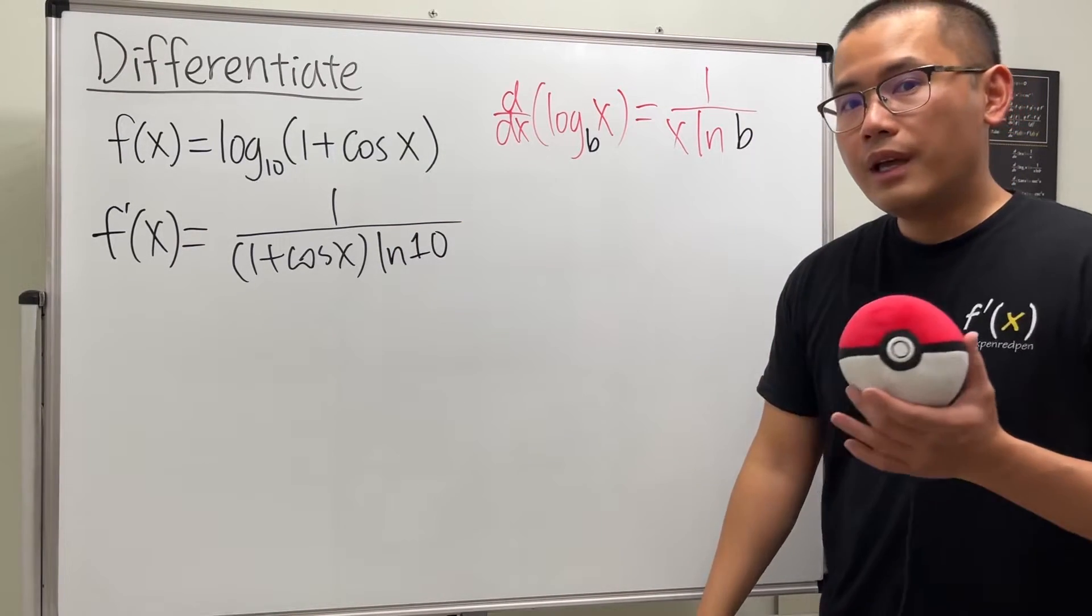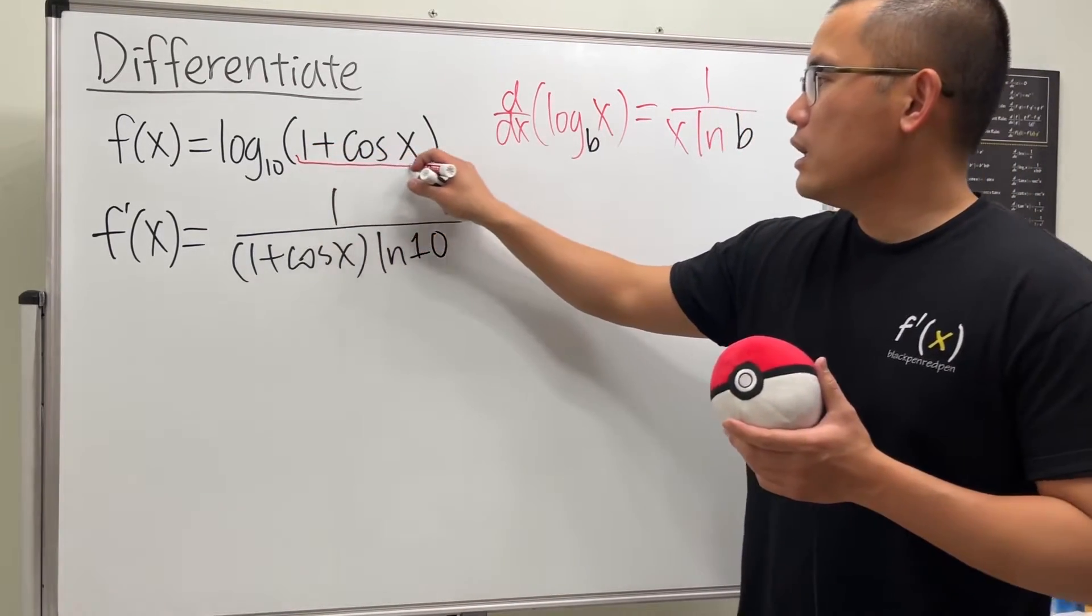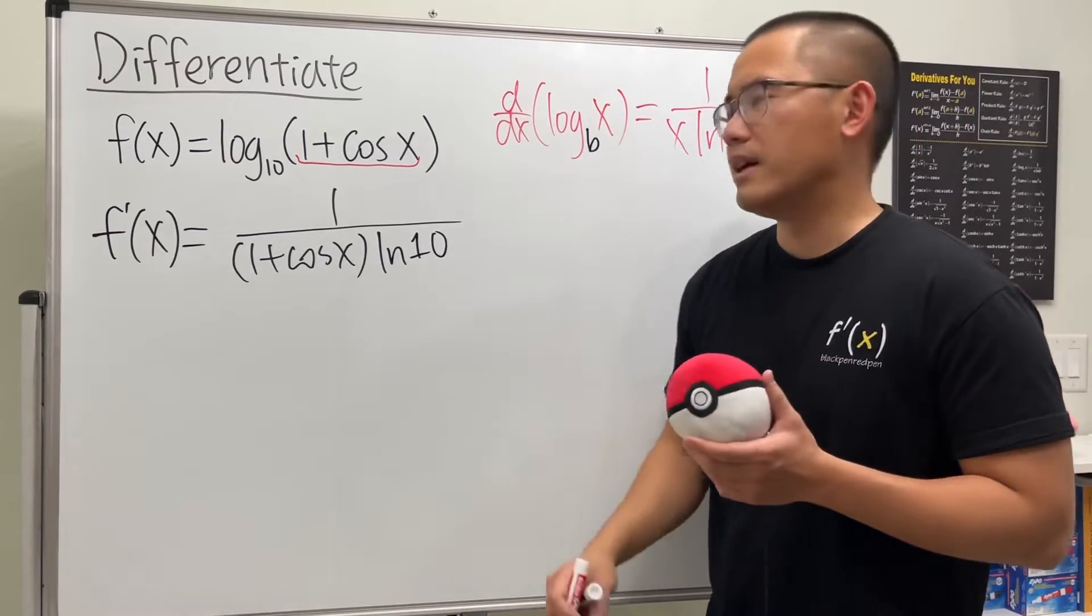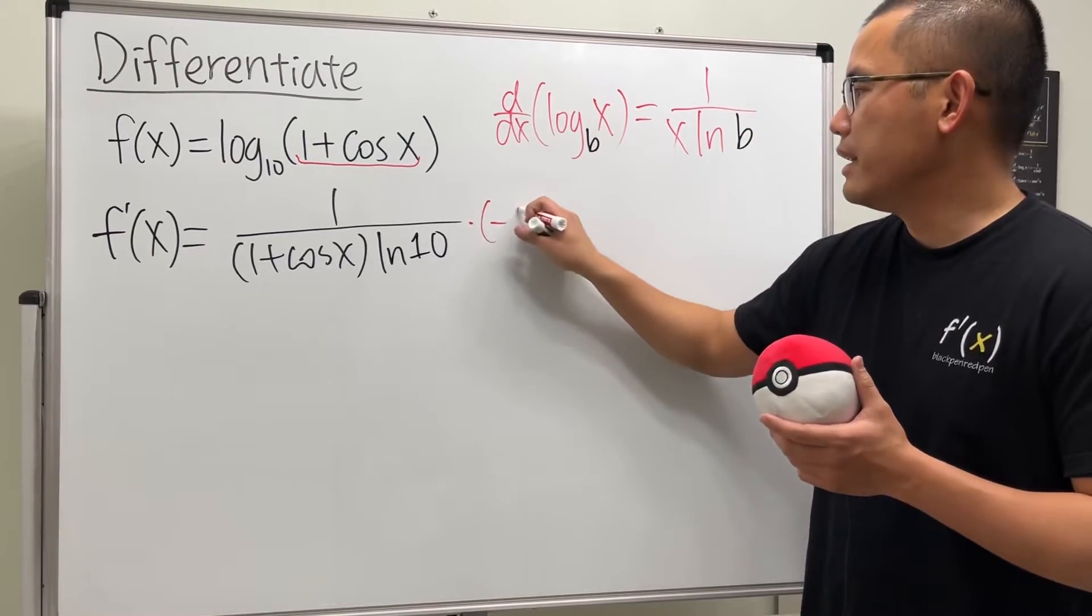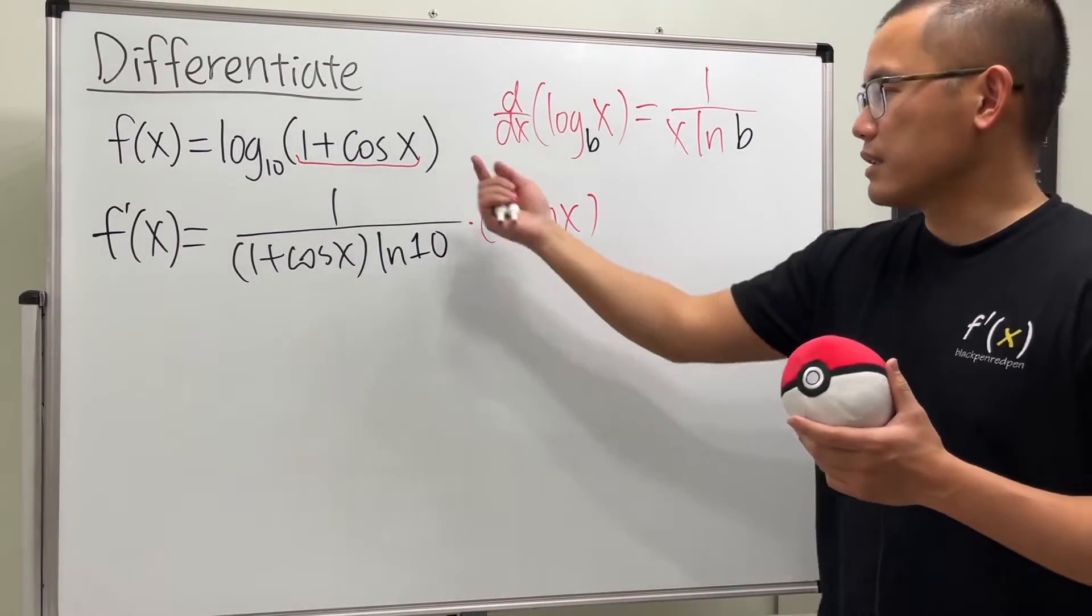We're not done yet because we always have to use the chain rule. Look at the inside and the derivative of this is negative sine x, so we are going to multiply this by negative sine x.